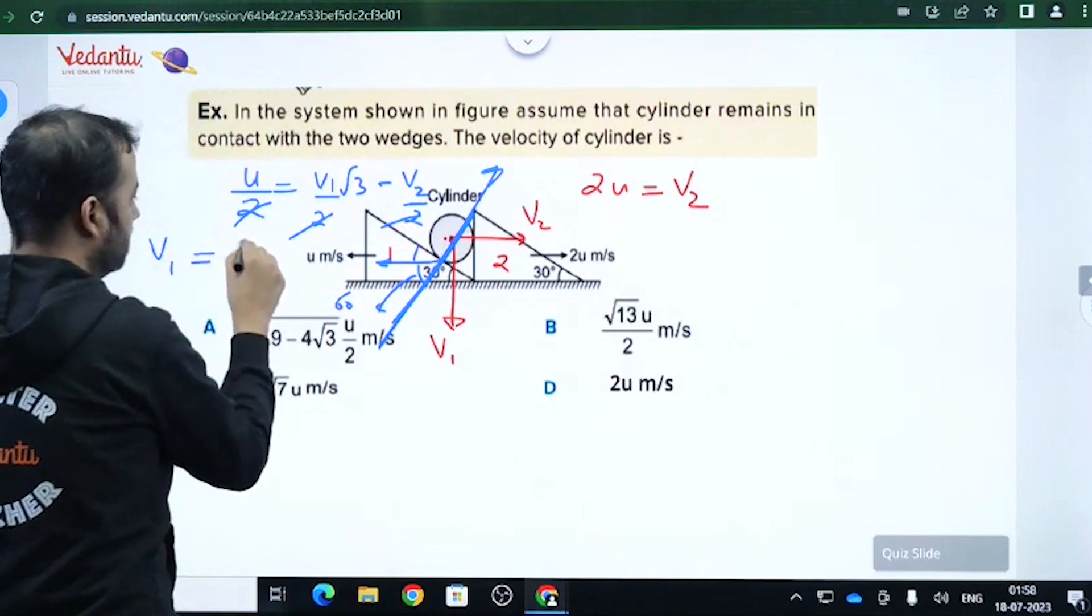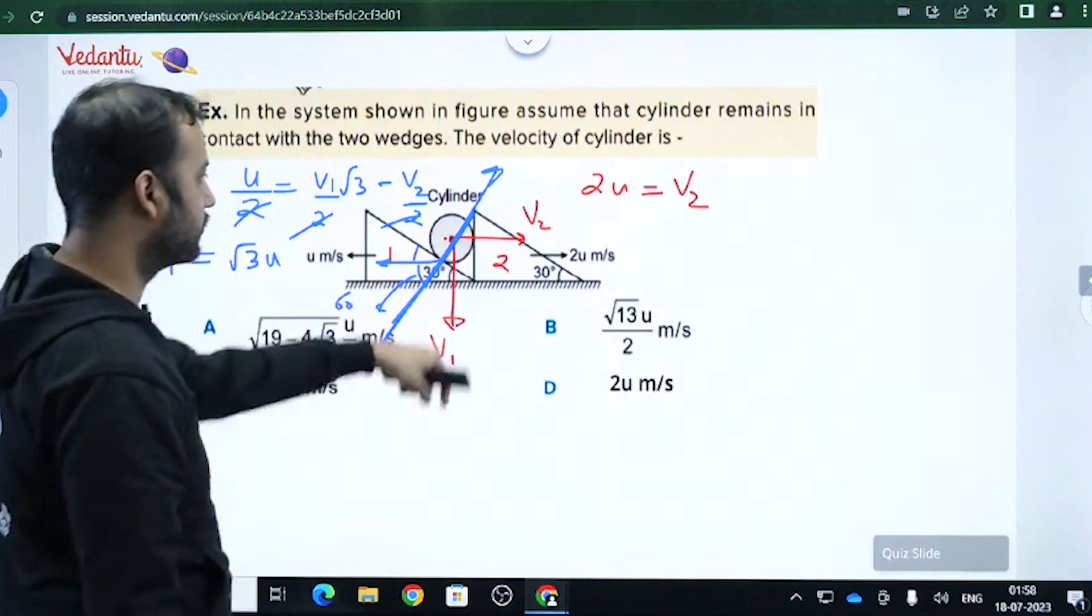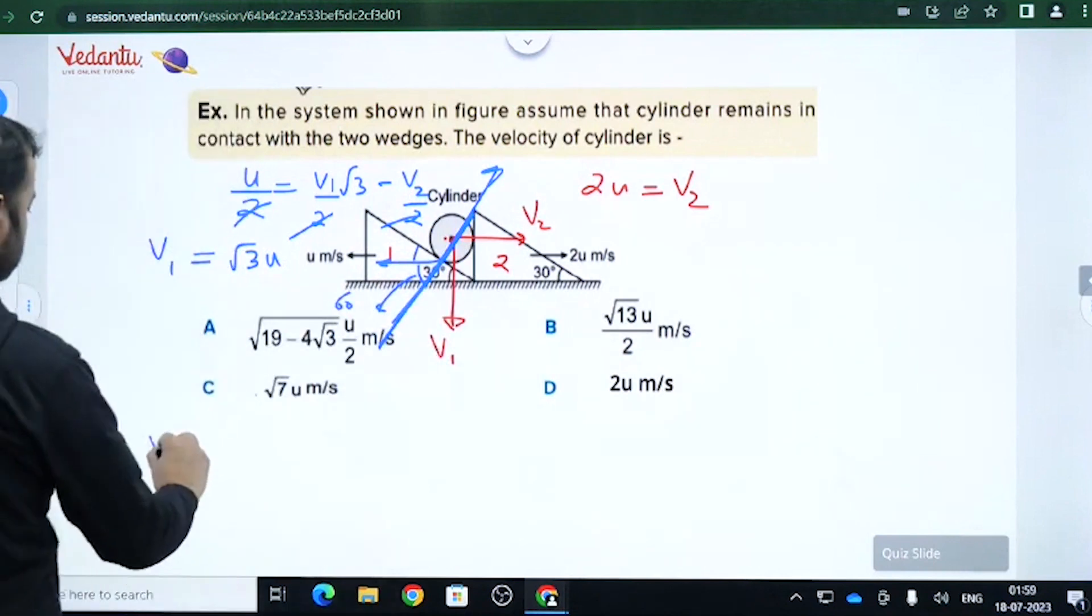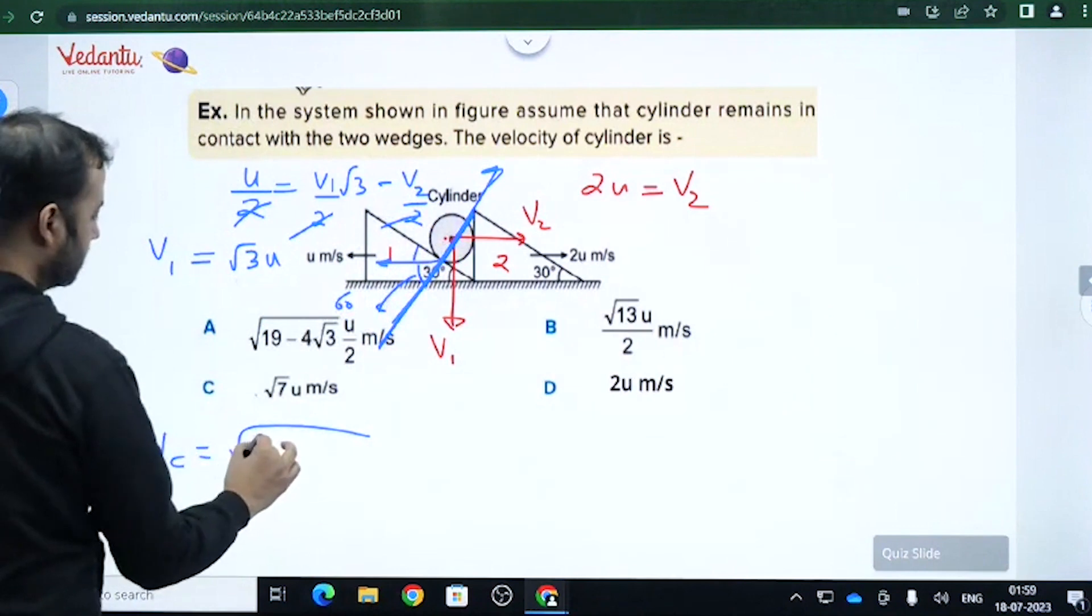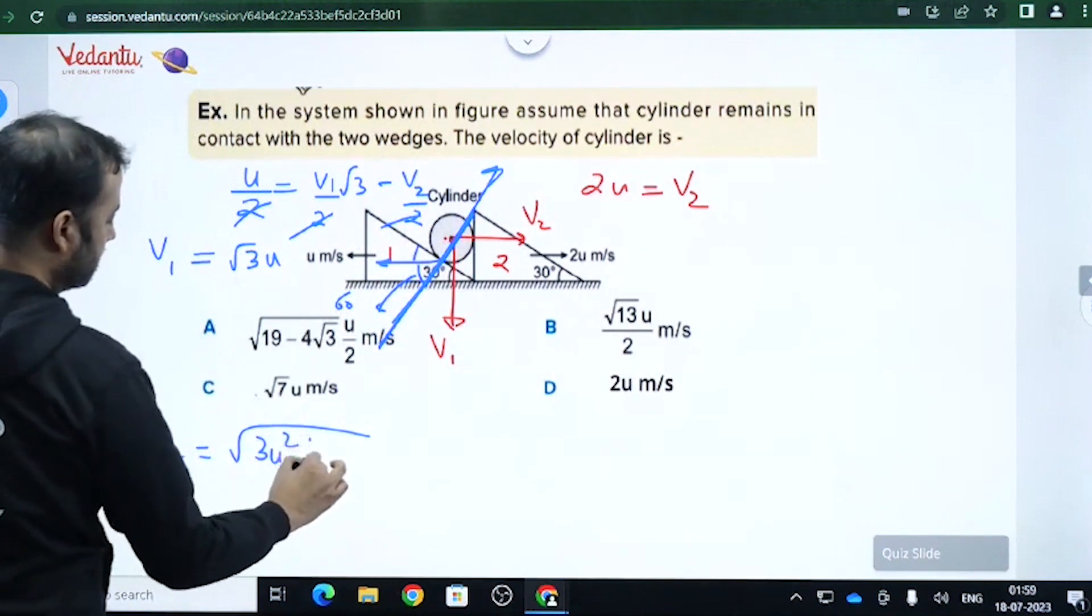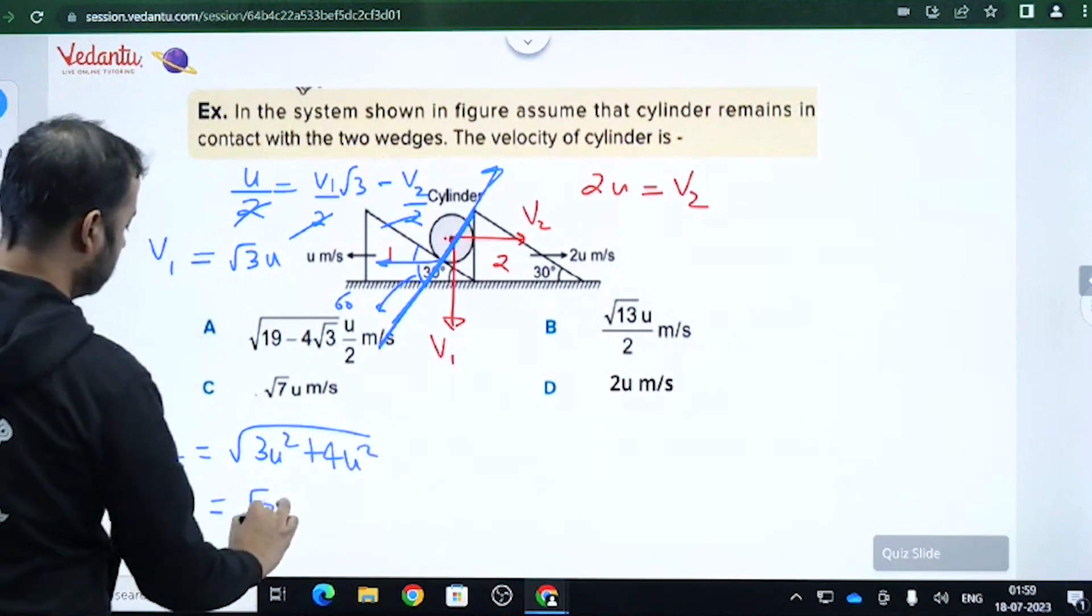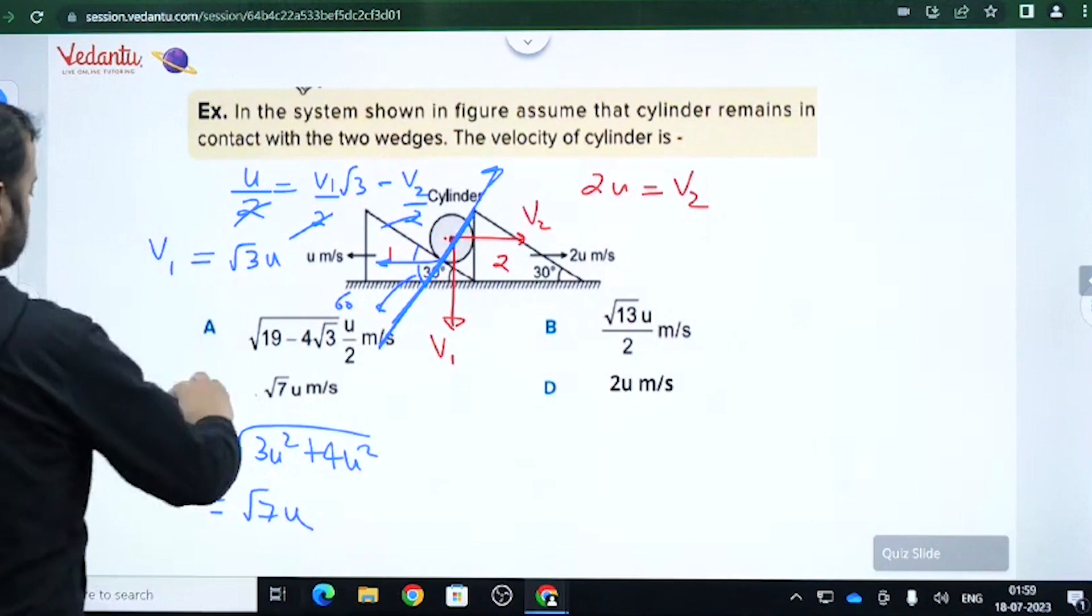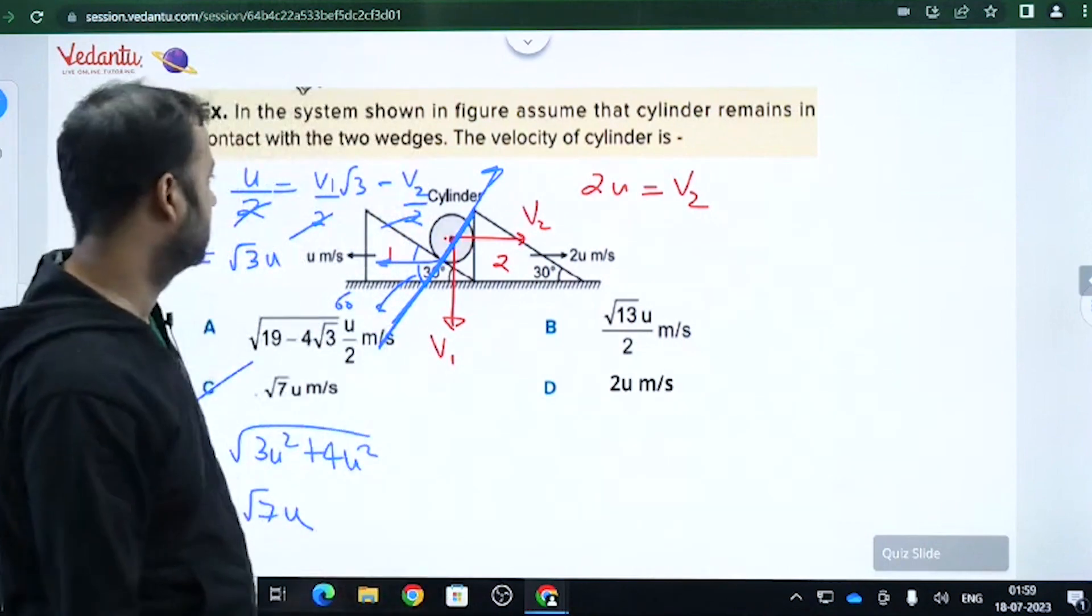So what is the velocity of cylinder? Under root of v1 square plus v2 square. So vc will become under root of 3u square plus 4u square. So that means 3u square plus 4u square, that means root 7u. Option c, right? I hope you have understood.